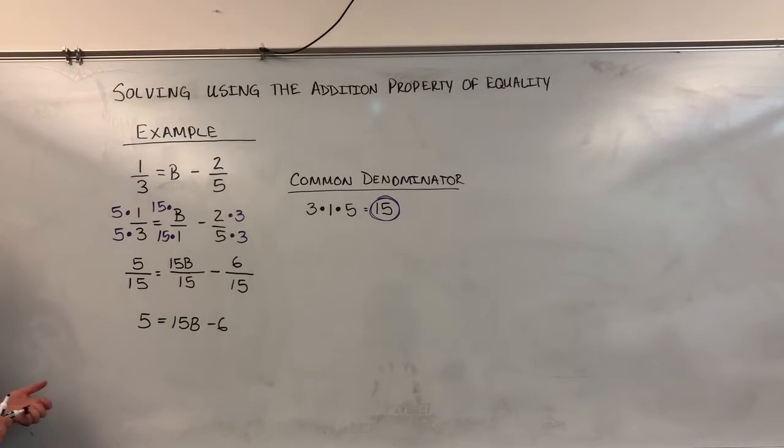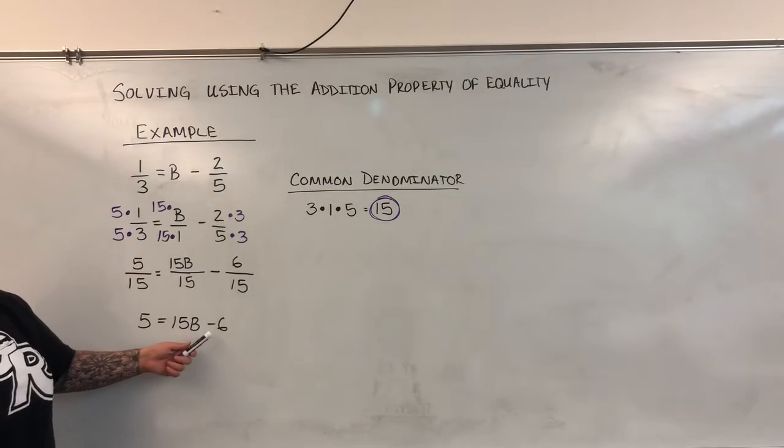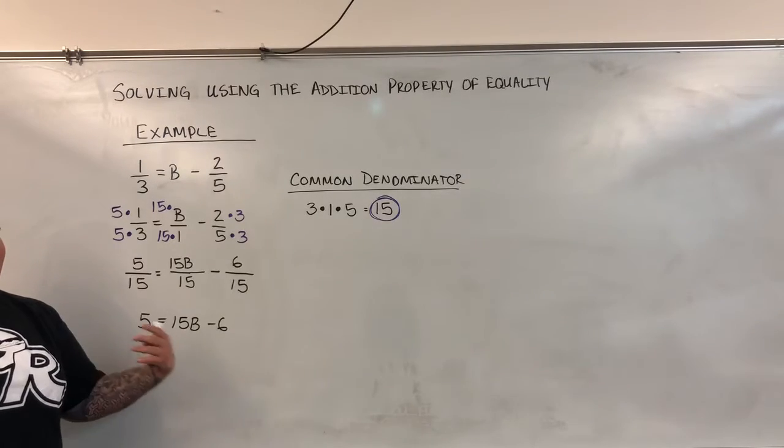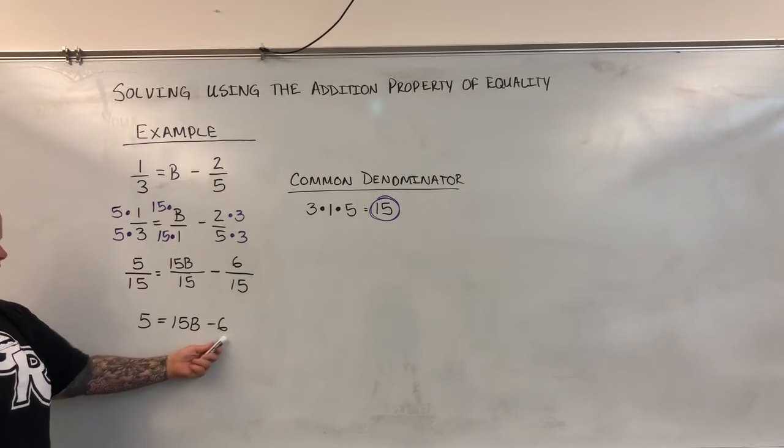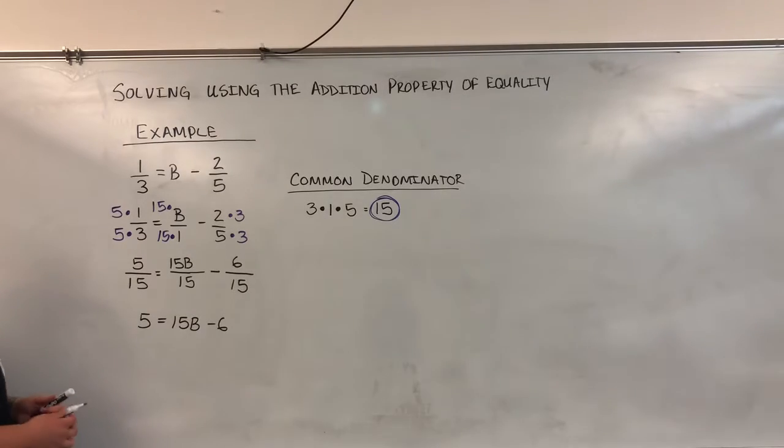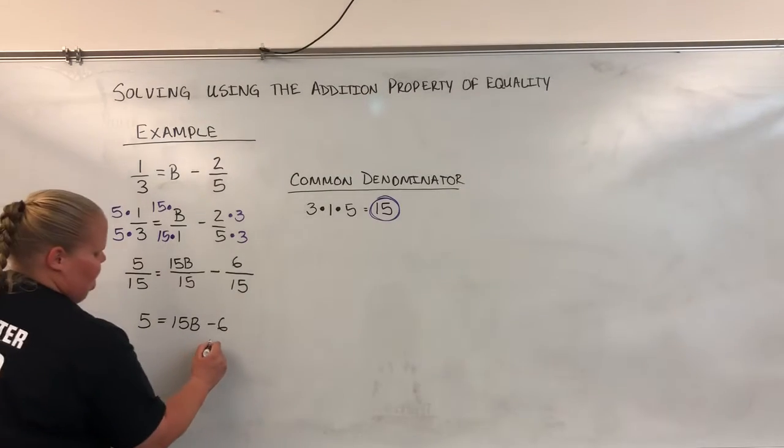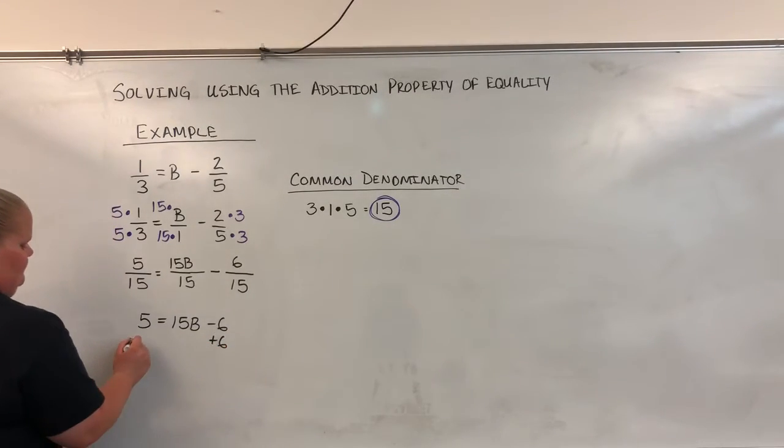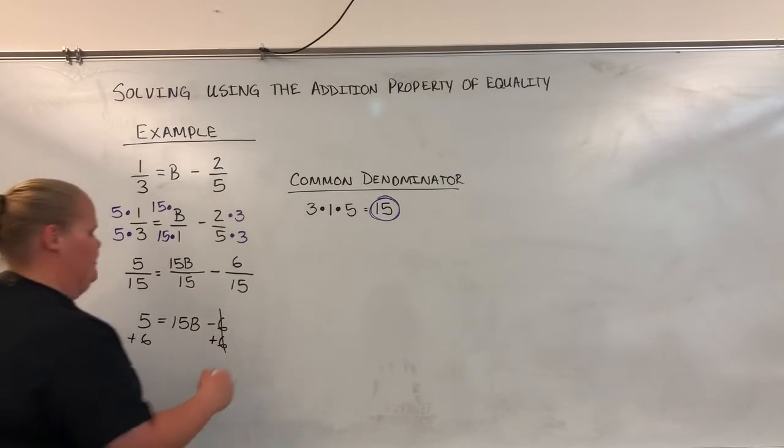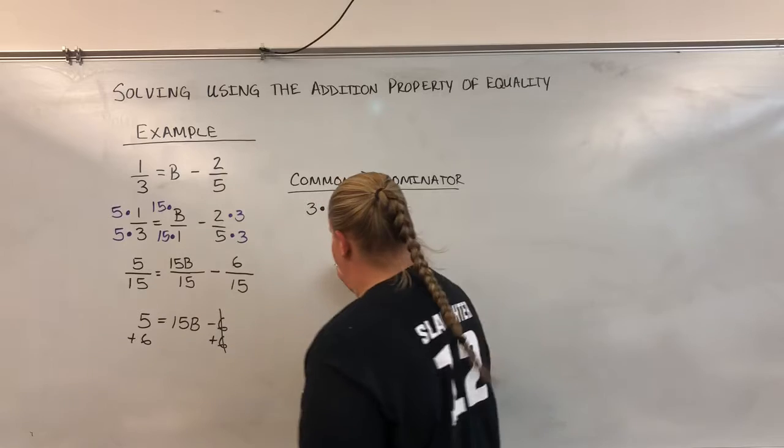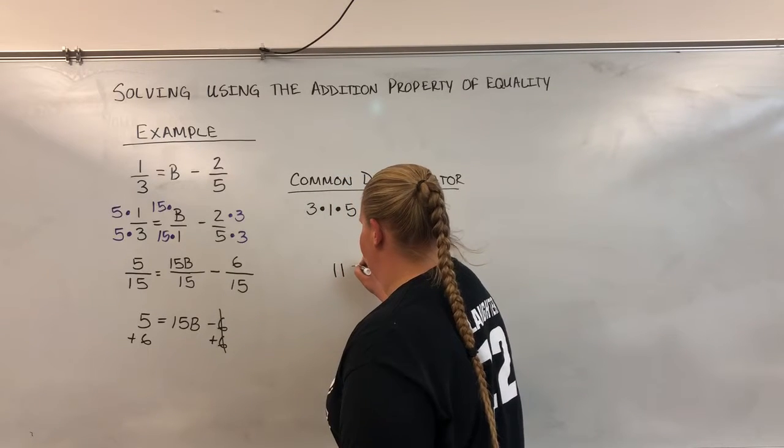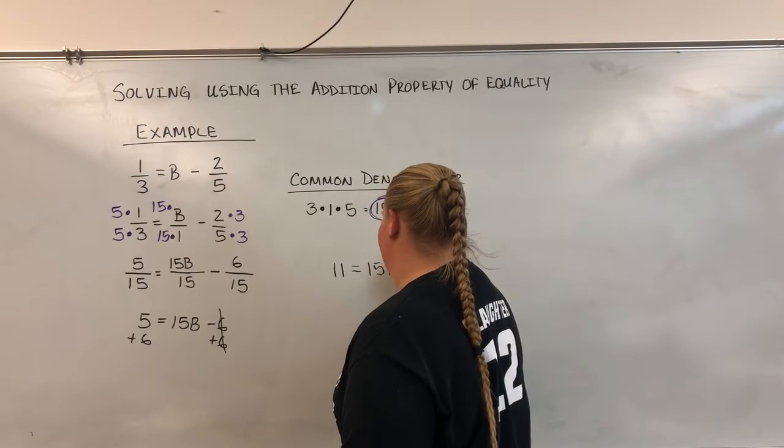To solve for B, what I need to do is move everything that isn't B over to the other side of the equal sign. So everything has to go this way. I'm going to do this by adding 6 to both sides. I have 11 equals 15B.